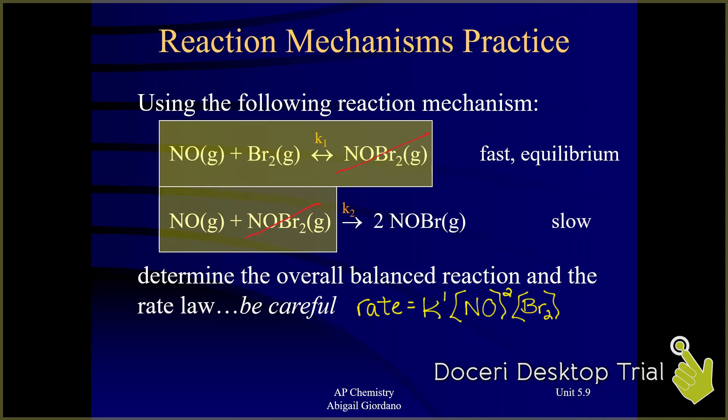Last thing I want to do here is determine the overall balanced reaction. As I said, that's no different. Whether the slow step is first, second, third, doesn't matter. So I've canceled out that intermediate. So here is my overall balanced reaction 2NO + Br2 yields 2NOBr. Okay, so that's no different. But this box out method, I think, is really helpful when the slow step is not first.